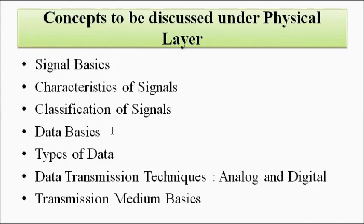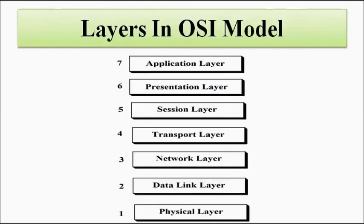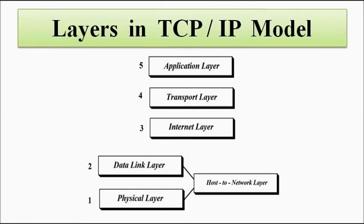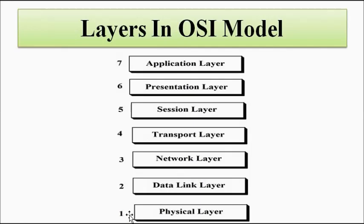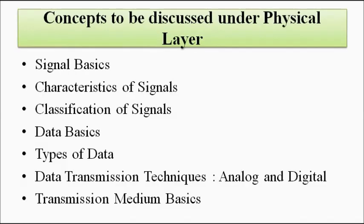Each layer in the OSI model or the TCP/IP model is so vast that you could write a book on each one. We cannot spend all our time on one layer, so we will do it in cycles — discussing a little about the physical layer, then moving to the data link layer, then the network layer, up to the application layer, and then coming back again.